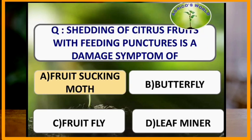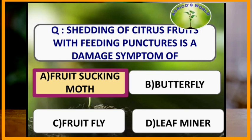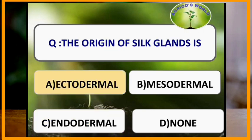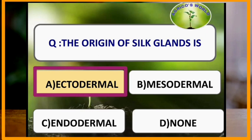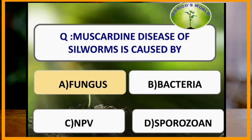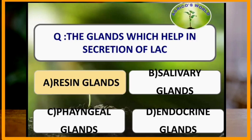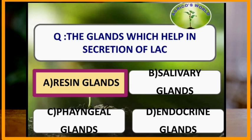Shedding of citrus fruits with feeding punches is the damage caused by fruit sucking moth. Notching of brinjal leaves is caused by the feeding of ash weevil. The origin of silk glands is ectodermal. Muscadine disease of silkworm is caused by fungus.